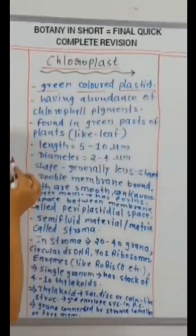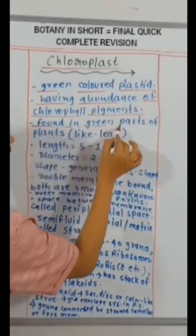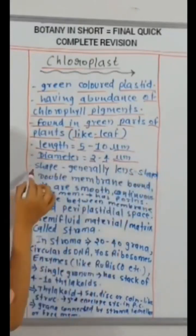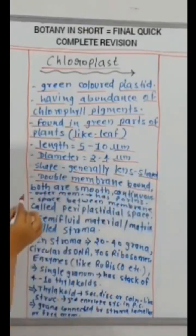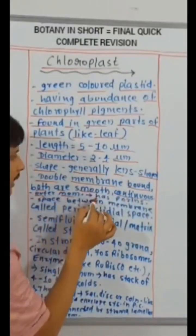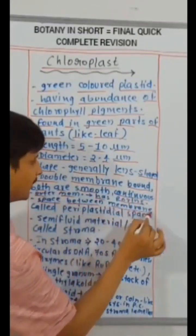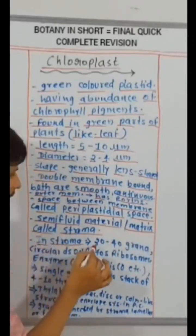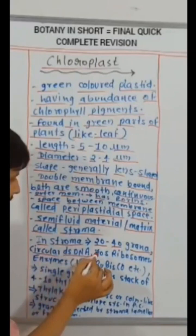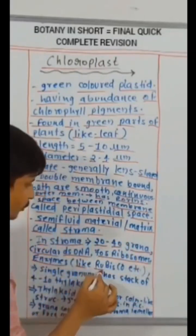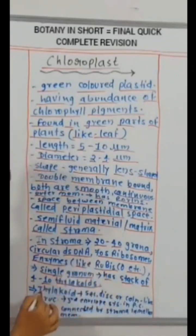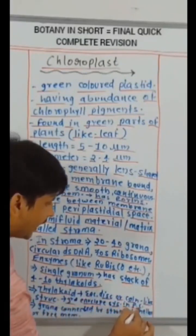Chloroplast. Green colored plastid. Having abundance of chlorophyll pigments. Found in green parts of plants like leaves. Length 5 to 10 micrometer. Diameter 2 to 4 micrometer. Shape generally lens shape. Double membrane bound. Both are smooth continuous. Outer membrane has porins. Space between membrane called periplastidial space. Semi-fluid material or matrix called stroma. In stroma, 20 to 50 grana. Circular double-stranded DNA. 70S ribosomes. Enzymes like Rubisco etc. present. Single granum has a stack of thylakoids. Thylakoid, sac or disc or coin-like structure. Represents third envelope system in plant cell. Grana connected by stroma lamellae or thylakoid membrane.